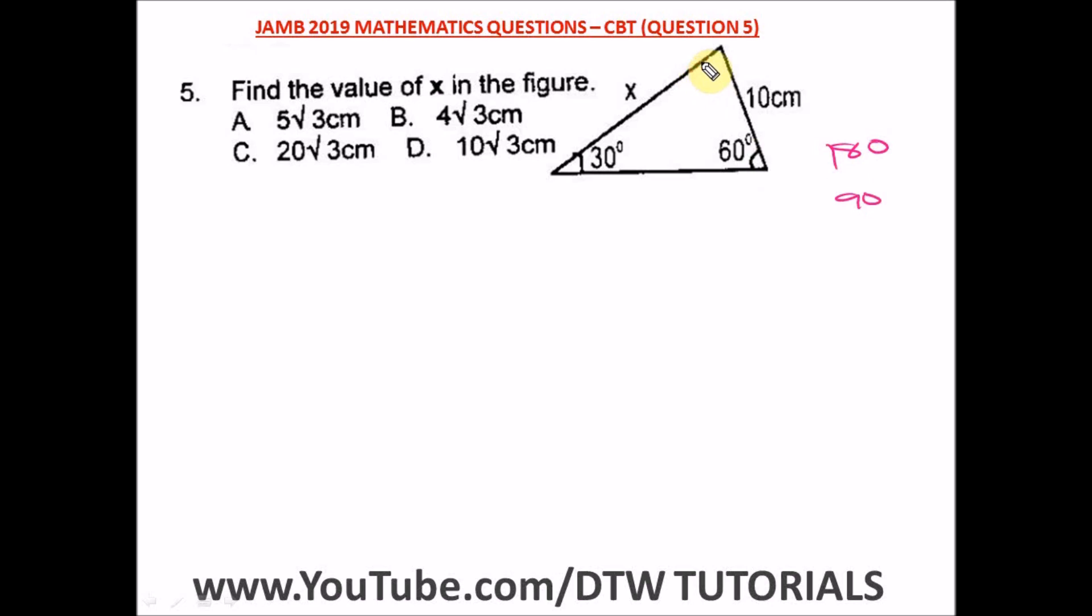this angle right here is a right angle. It's 90 degrees, a right angle triangle.